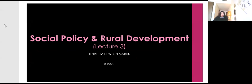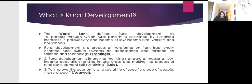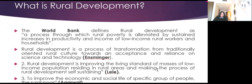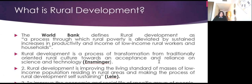Here we will learn about social policy and rural development. In the first slide, the World Bank defines rural development as a process through which rural poverty is alleviated by sustained increases in productivity and income of low-income rural workers and households. The World Bank has defined rural development as a process through which rural poverty is reduced — combating rural poverty by sustained increase in productivity and income of low-income rural workers and households.